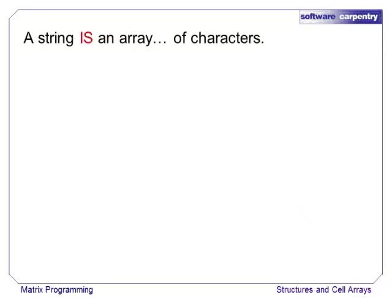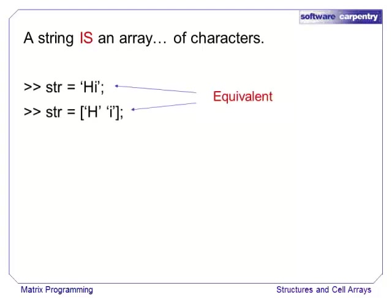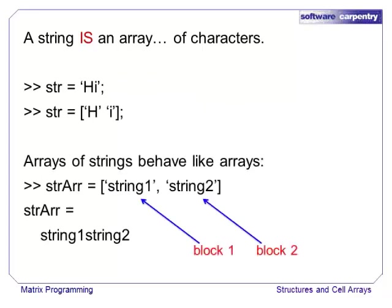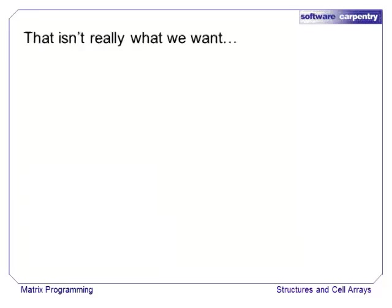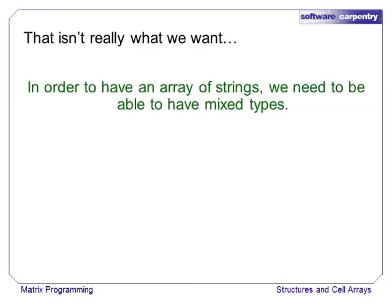Since a string is an array, creating an array from two strings is really just a block matrix operation like we saw in the lecture on MATLAB basics. Of course, this isn't really what we wanted. It all comes back to the fact that arrays can contain only simple types like numbers or characters. In order to have a true array of strings, we need an array of arrays. MATLAB has a special kind of array called a cell array that can hold complex types.